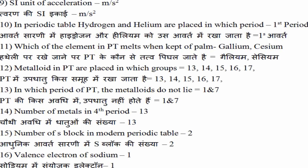दूसरा आपको periodic table में कौन से ऐसे तत्व हैं जो हथेली पे रख सकते हैं. 12वाँ question आपका कि metalloid — उपधातु — periodic table में कौन से group में आते हैं. मेरे पास option नहीं थे इसलिए मैंने सारे option दिये. तो group 13, 14, 15, 16 और 17 — इन पाँचों समूह में आपके उपधातु पाए जाते हैं.